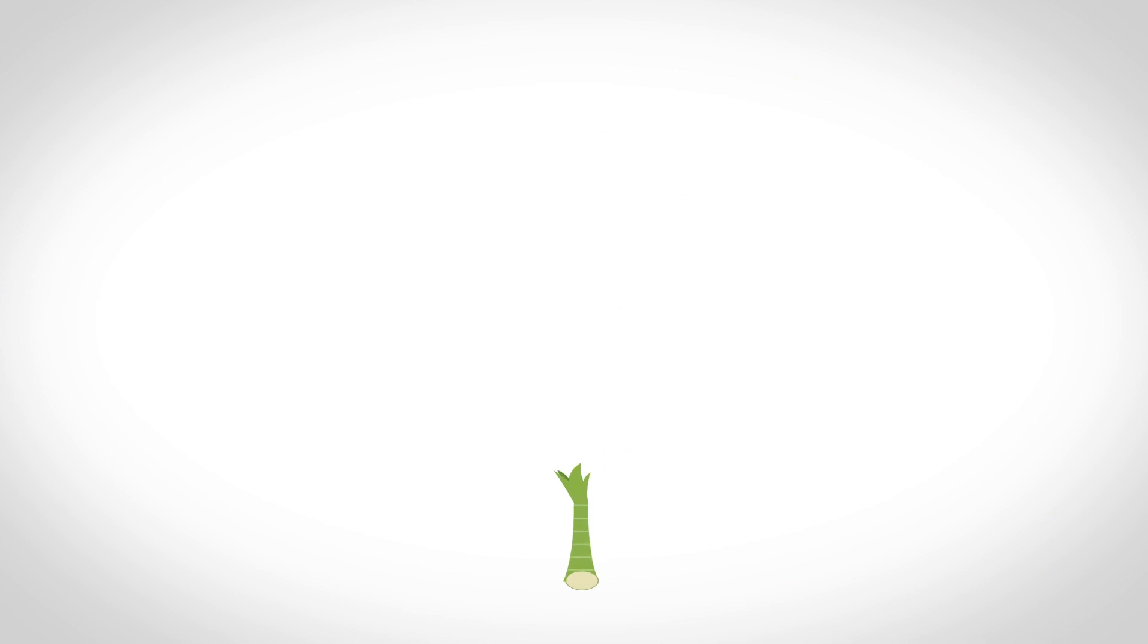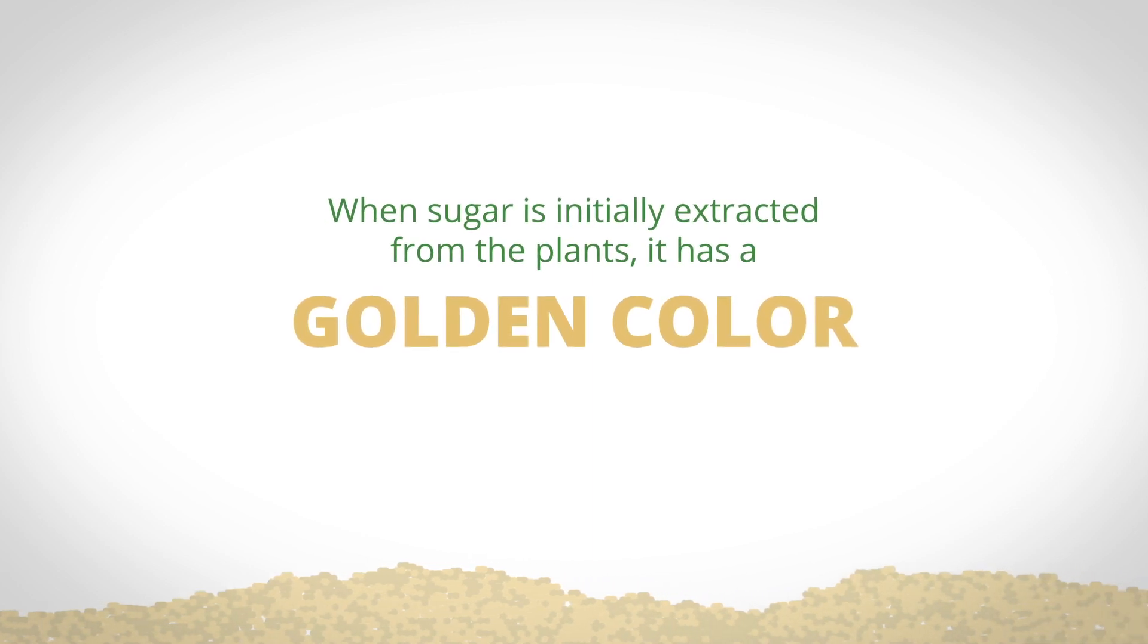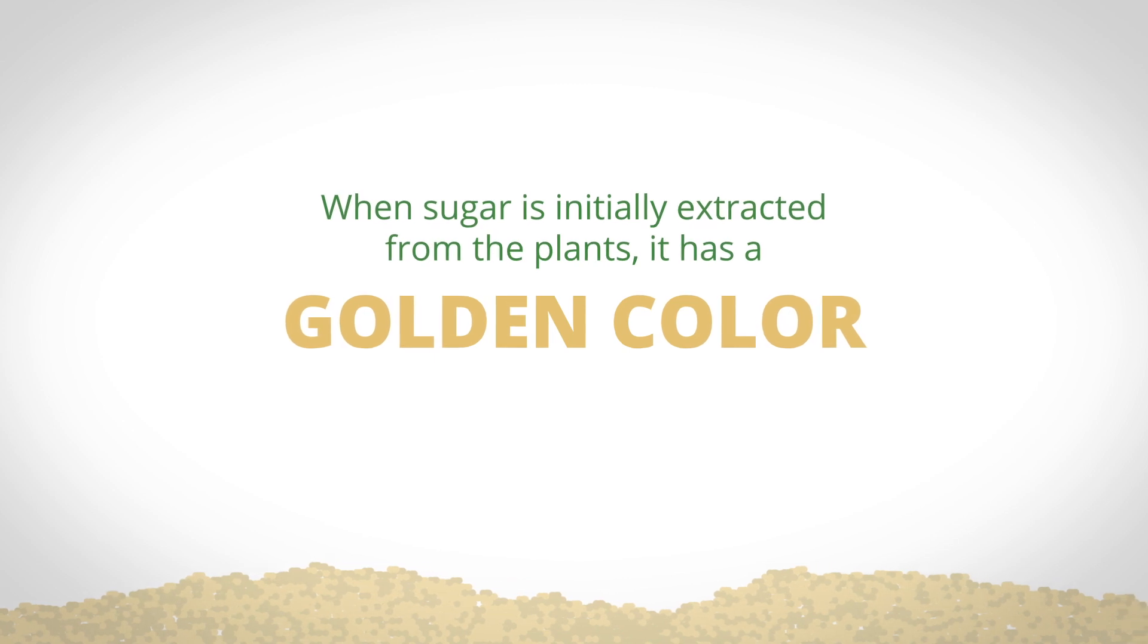Sugar cane looks similar to bamboo and stores the sugar in its stalk. When sugar is initially extracted from the plants, it has a golden color because of the non-sugar materials attached to and within the sugar crystals. The sugar is then purified by removing the plant fibers and molasses, resulting in white sugar crystals.